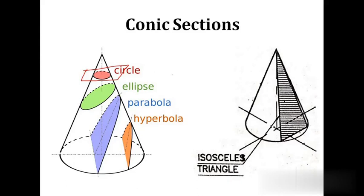The second one is ellipse. Ellipse is the section obtained by cutting a right circular cone by a section plane inclined to the axis of the cone, where the section plane also cuts all the generators. The section plane makes an angle with the axis of the cone. The condition to get an ellipse is that the inclination of the section plane with the axis should be greater than the inclination of the generator with the axis.